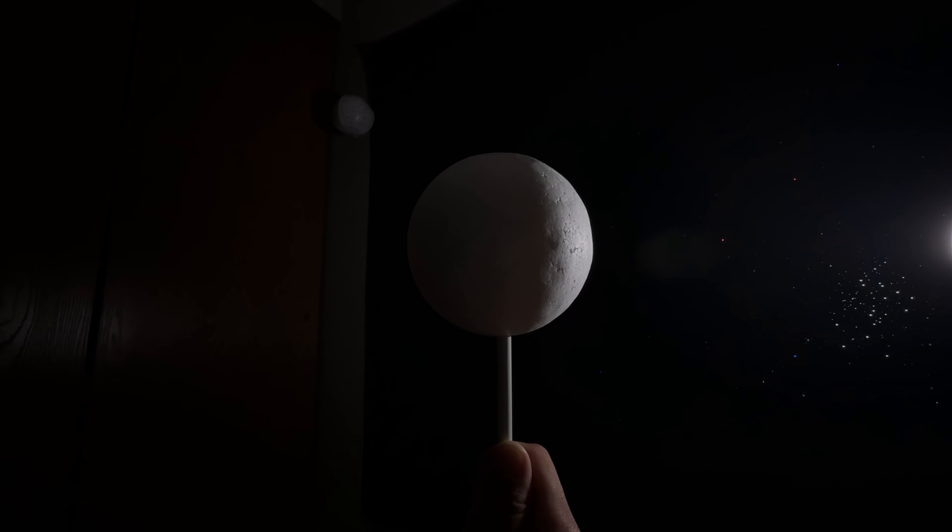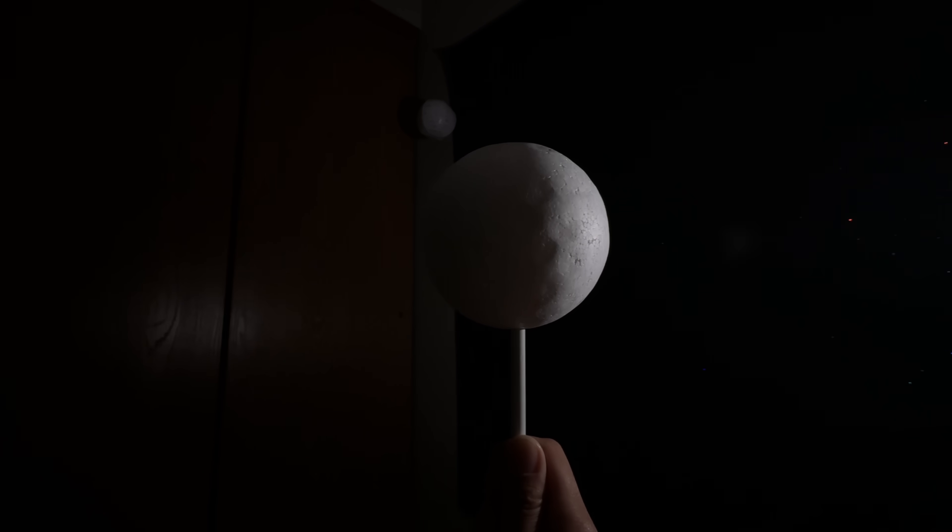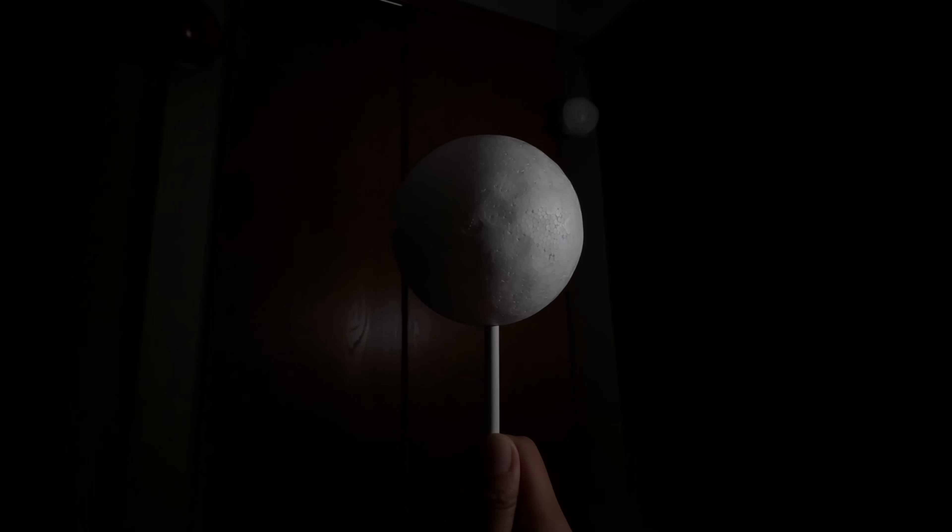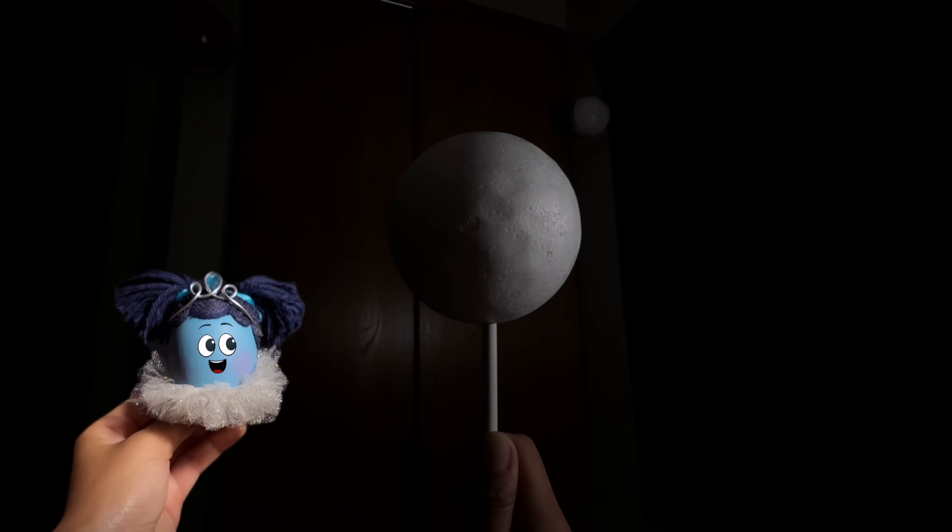As the moon keeps moving, it looks like half a cookie. This is called the first quarter moon.